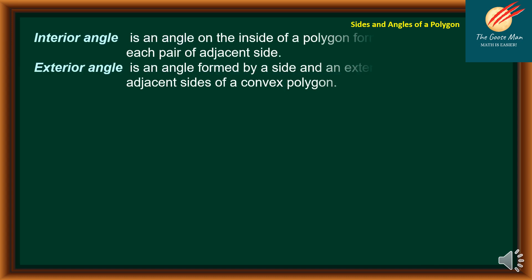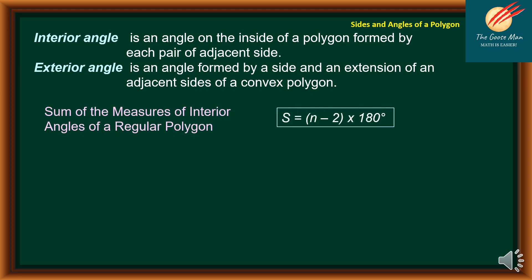Let's recall: the interior angle is the angle on the inside of a polygon formed by each pair of adjacent sides. On the other hand, the exterior angle is an angle formed by the side and extension of adjacent sides of a convex polygon. For the formula we will use: the sum of the measures of the interior angles of a regular polygon is S = (N − 2) × 180.